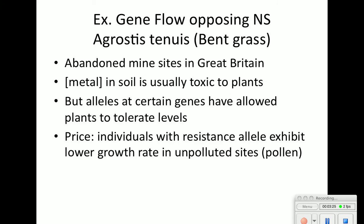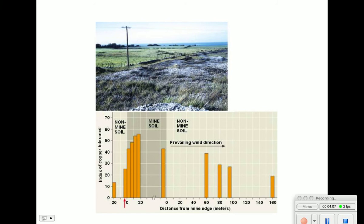Here's an example of gene flow opposing natural selection in bent grass. There are abandoned mine sites in Great Britain where there's a high concentration of metal in the soil — usually toxic to plants. But some plants have adapted; they have alleles at certain sites on their genes that allow them to tolerate these levels. If we take this bent grass that thrives in metal-contaminated soil and transplant it to an unpolluted site, it actually has lower growth rates — it thrives in the mine soil but doesn't do well when moved.